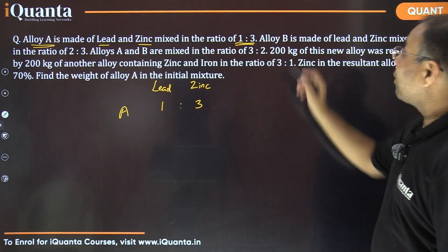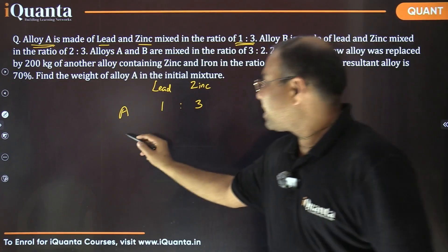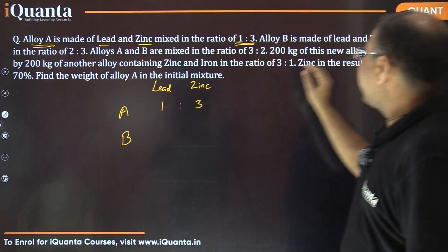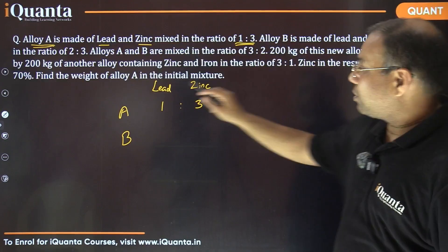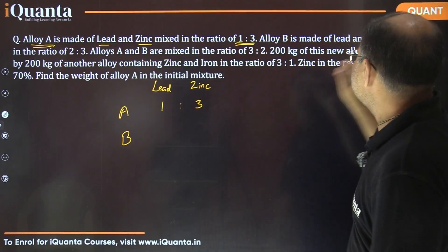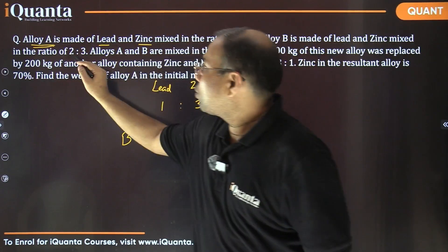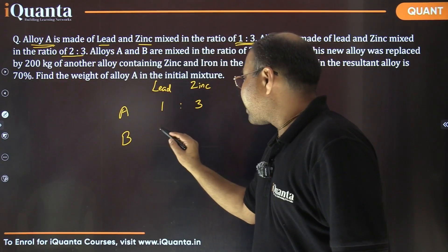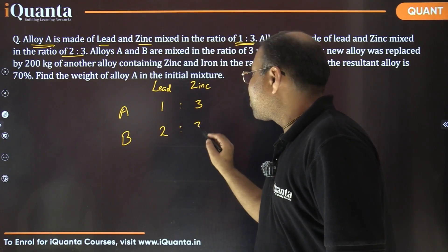Now, alloy B is also there. Alloy B is made of again lead and zinc — the same components — and they are mixed in the ratio 2:3 this time. So ratio is 2:3.